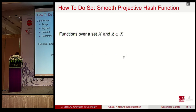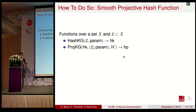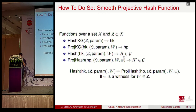The second primitive we need is a Smooth Projective Hash Function (SPHF), defined over a set X with a language L that is a subset of X. There is an algorithm that computes the hashing key, a projection key generation algorithm, and a projection algorithm that projects a word w using the hashing projection key and a scalar. The key property is: if w belongs to the language and the scalar is a witness of w, then the hash value and the projected value are the same — it's two ways to compute the same value.